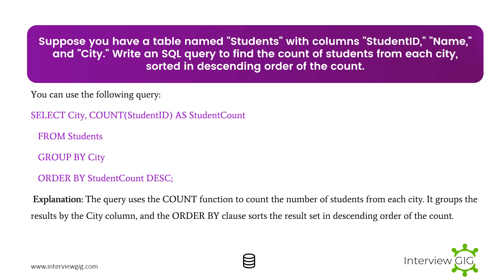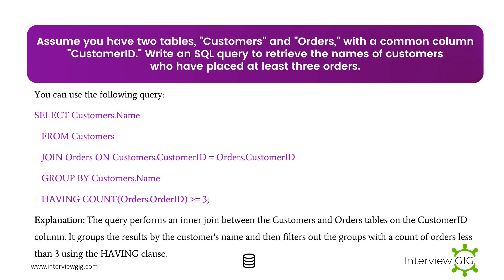Next Scenario: Suppose you have a table named Students with columns Student ID, Name, and City. Write an SQL query to find the count of students from each city, sorted in descending order of the count. The query uses the COUNT function to count students from each city, groups the results by the City column, and the ORDER BY clause sorts the result set in descending order of the count.